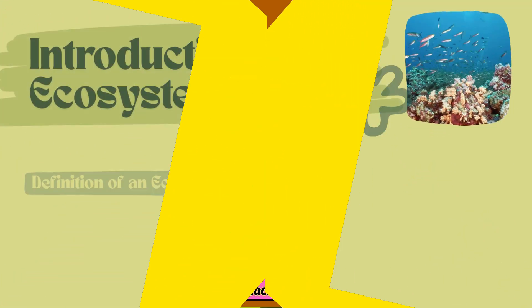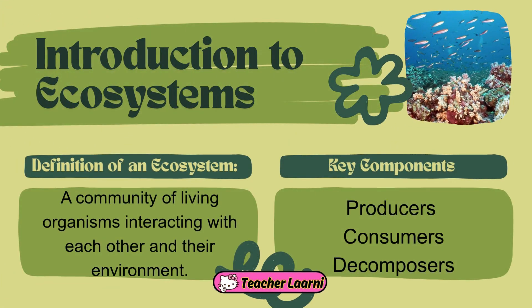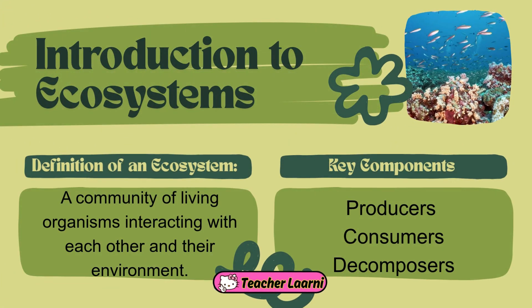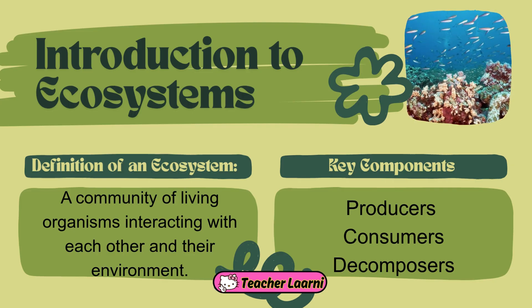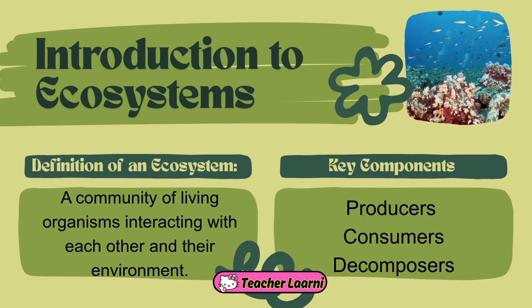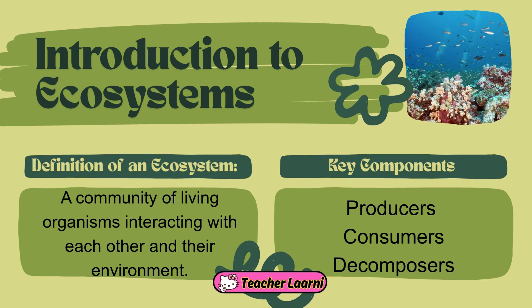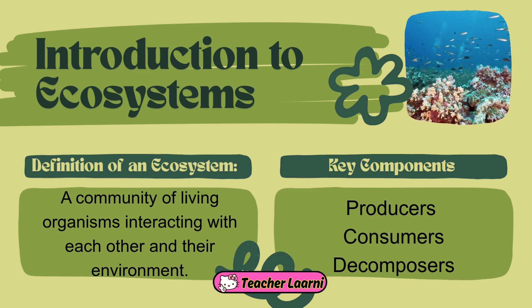An ecosystem is a community where living things interact with each other and their surroundings. It has three key components: producers, consumers, and decomposers.